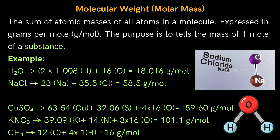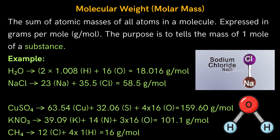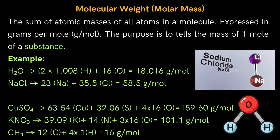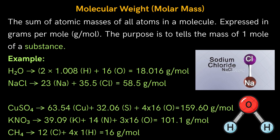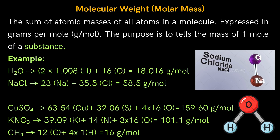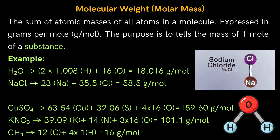Molecular weight or molar mass is the sum of atomic masses of all atoms in a molecule, expressed in grams. Its purpose is to represent the mass of 1 mole of a substance. For example, the molecular weight of water (H₂O) = 2 × 1.008 + 16 = 18.016 g. The molecular weight of NaCl = 23 + 35.5 = 58.5 g. Similarly, the molecular mass of other compounds such as copper sulfate, potassium nitrate, and methane can be calculated as given here.